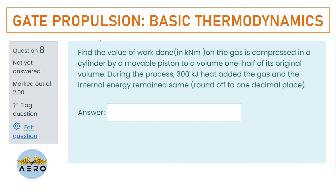Find the value of work done in kN·m on the gas compressed in a cylinder by a movable piston to a volume of one-and-a-half of its original volume. During the process, 300 kJ of heat is added to the gas and the internal energy remains the same. Round off to 1 decimal place.